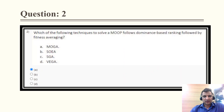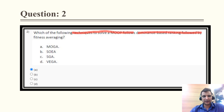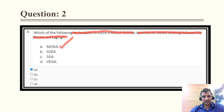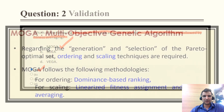Question 2: which of the following techniques solve the multiple objective optimization problem using dominance-based ranking followed by fitness averaging? MOGA is the technique which uses these two concepts, so option A is the correct one.